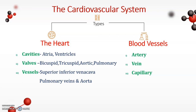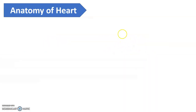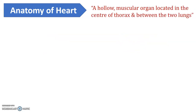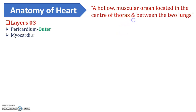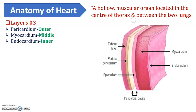Now let us discuss the anatomy of the heart. The heart is a hollow muscular organ located at the center of the thorax, in between the two lungs, containing three layers: pericardium, myocardium, and endocardium. The heart is made up from these three layers.